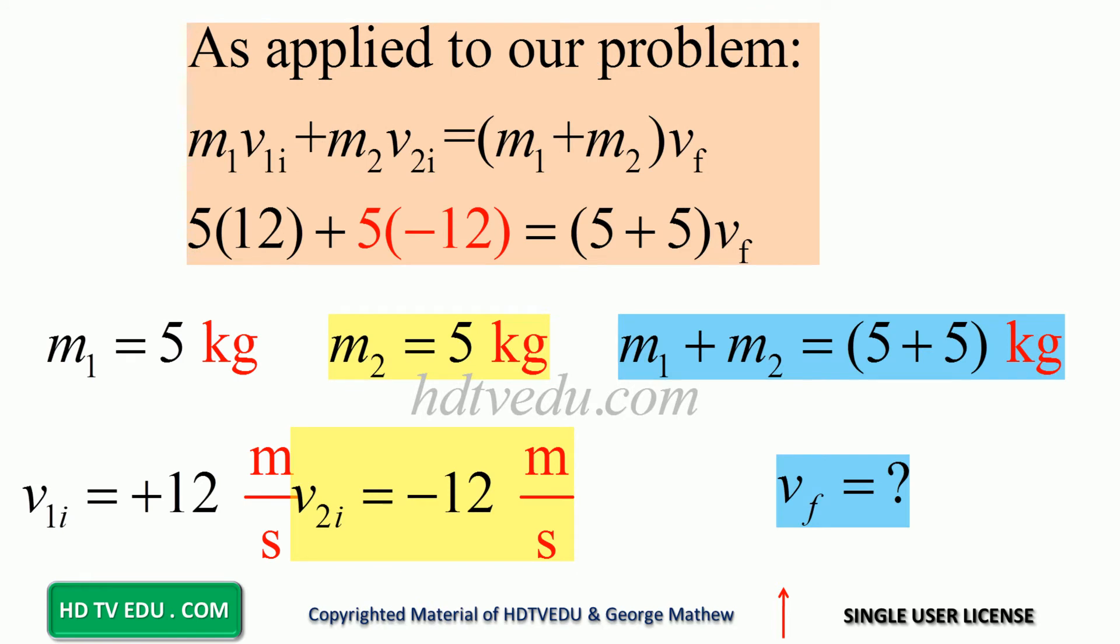What is the momentum of m1? 5 kg times 12 is 60 kg meter per second. What is the momentum of the second mass?